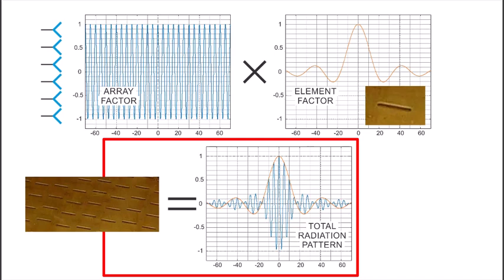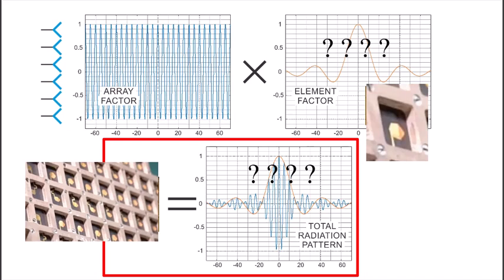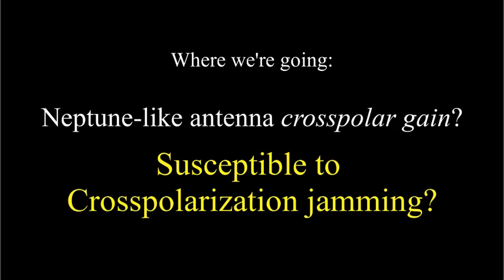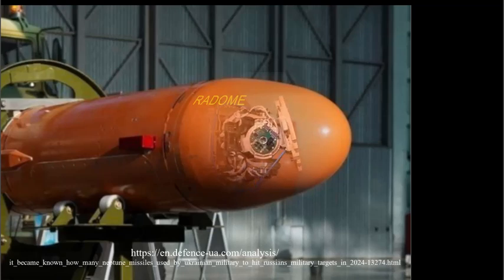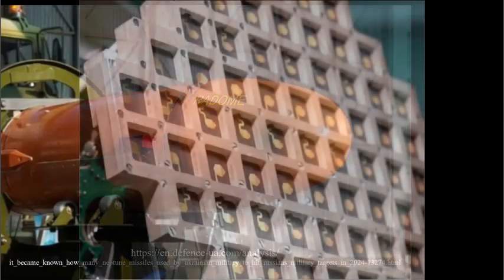The bottom line is that the only thing missing from the Engage model is the radiation pattern of a single circularly polarized hex microstrip cavity-backed antenna — the kind used for 5G wireless telecommunications. Where we're going with this overall is to figure out what the Neptune seeker antenna's relative cross-polar gain is or might be, to determine whether it might be jammable by cross-pol jamming. The radome will enhance the cross-polar gain of the underlying antenna, whatever that gain is. So the key question is: what's the cross-polar gain of the hex microstrip radiating elements?